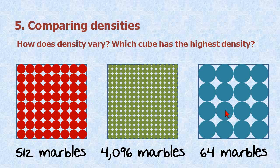Of these three cubes here, which cube has the highest density? Our original cube, the cube that has 4,096 marbles, or the cube that has 64 marbles. These marbles are half the diameter of the original marbles. These blue marbles are twice the diameter. I'll let you think about it for a moment.